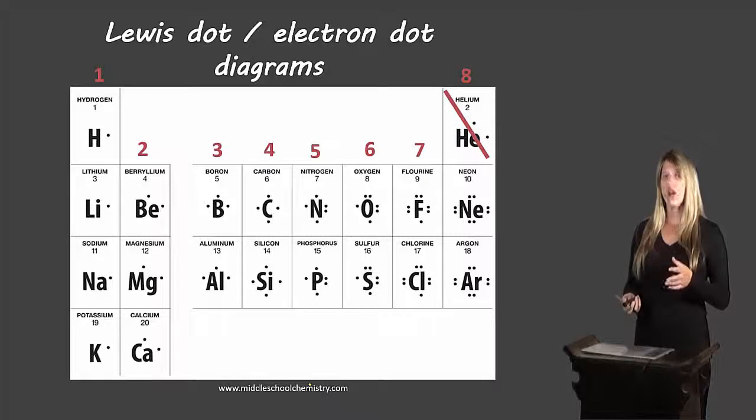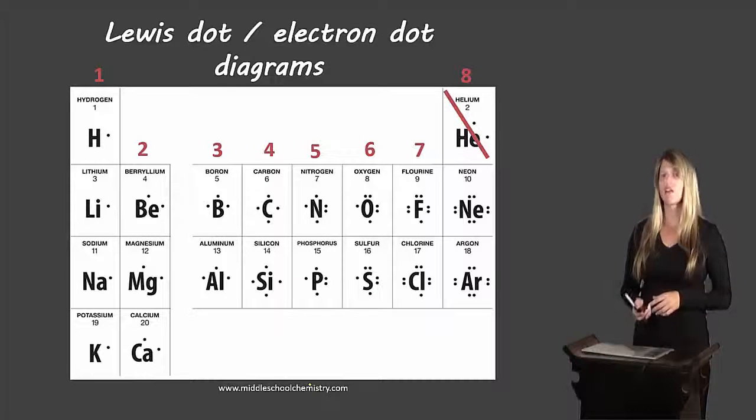So everything in the first column one dot, two dots, three dots, four dots, all the way across to eight dots with the exception of helium which only has two dots even though it's in the last column.